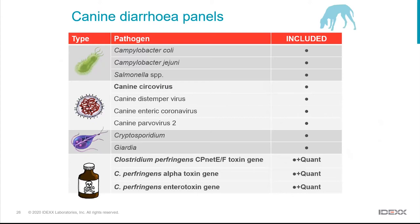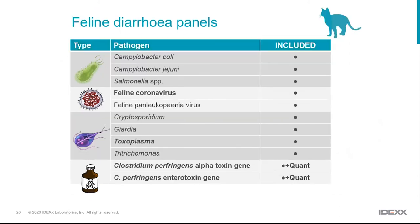For Clostridia, a low quantitative result is likely not significant; a high range result could be the sole cause but may also reflect underlying gut disease driving the increase. The cat panel looks for the same bacterial species, coronavirus and panleukopenia for viruses, and additionally Toxoplasma and Tritrichomonas for protozoa, along with Cryptosporidium and Giardia. The cat panel includes alpha toxin and enterotoxin for Clostridia but not NetF.